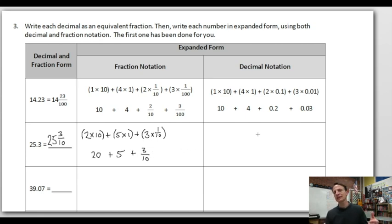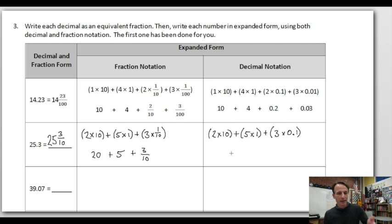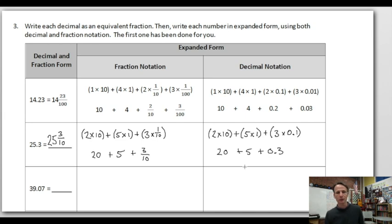Expanded form without multiplication — just do the multiplication: 20 + 5 + 3/10. For decimal notation it starts the same way; we just write the fractions as decimals. So: (2 × 10) + (5 × 1) + (3 × 0.1). And without multiplication: 20 + 5 + 0.3.